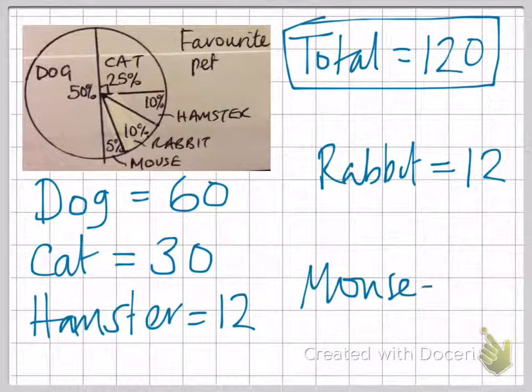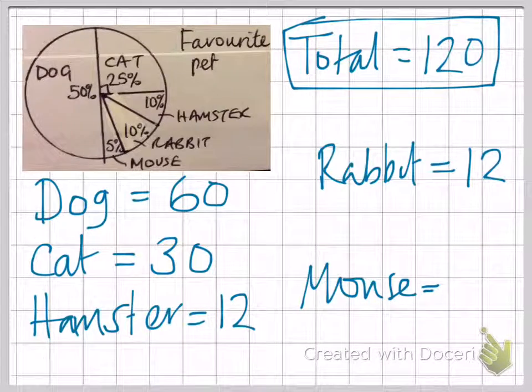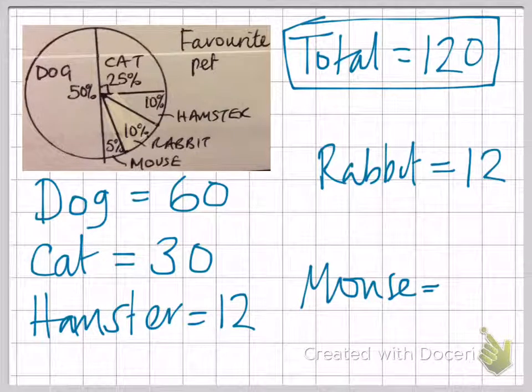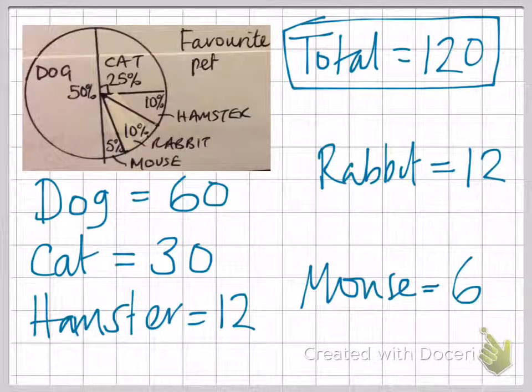The mouse is 5%. A quick way of working out 5% is to do half of 10%. So if 10% is 12, 5% will be 6. Altogether these should add up to 120.